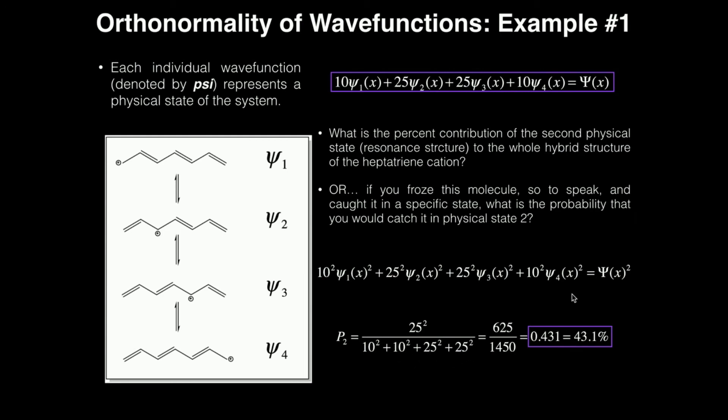So the percent contribution of ξ2 would be this 25 squared divided by the sum of all the squared states. 10 squared plus 10 squared, that's 1 and 4. And 25 squared and 25 squared, that's 2 and 3. And you just calculate this, it's 625 divided by 1450. So the percent contribution of ξ2, which also would happen to be the same as 3, is 43.1%. That's how much ξ2 as a physical state contributes to the entire resonance hybrid, which is the actual molecule itself.